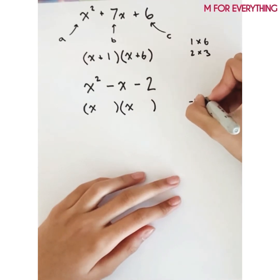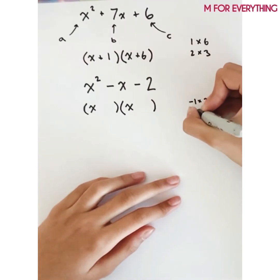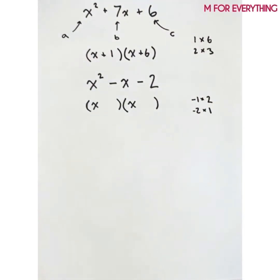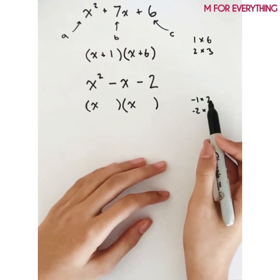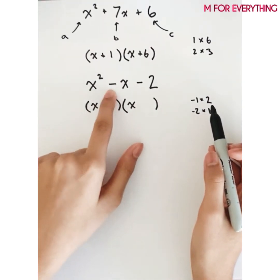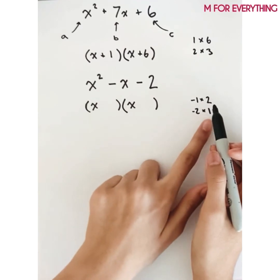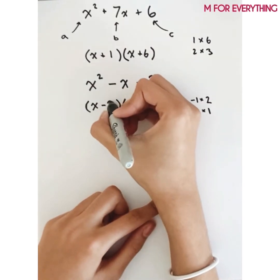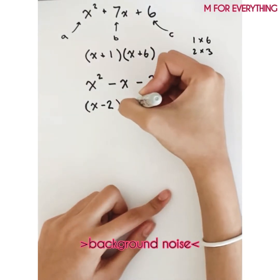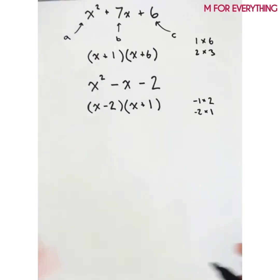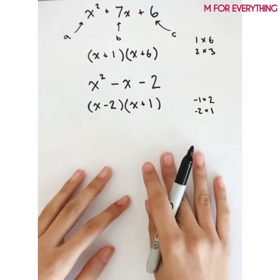The multiples of negative 2 are: negative 1 times 2, and negative 2 times 1. Negative 1 plus 2 does not equal negative 1, but negative 2 plus 1 does equal negative 1. So we put negative 2 in one parenthesis and plus 1 in the other, giving us (x-2)(x+1).